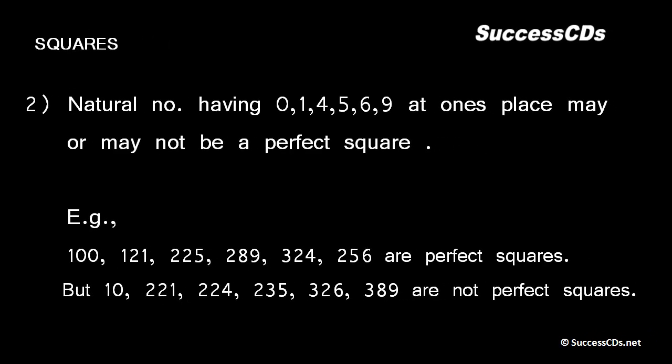Natural numbers having 0, 1, 4, 5, 6, or 9 at the ones place may or may not be a perfect square. For example, numbers 100, 121, 225, 289, 324, and 256 are all perfect squares of 10, 11, 15, 17, 18, and 16 respectively.